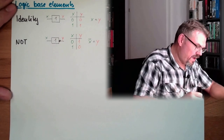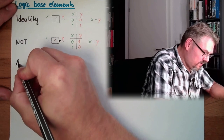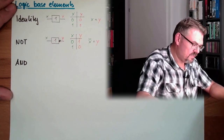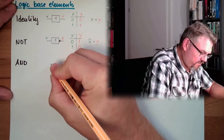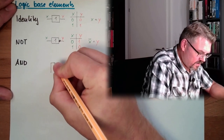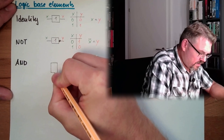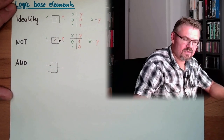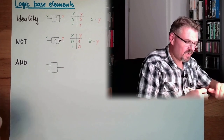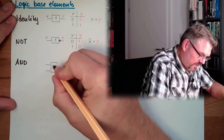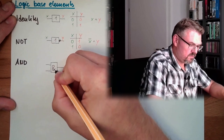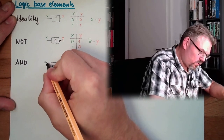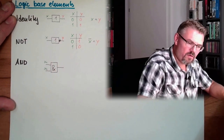And then we have a so-called AND. The symbol has two entries and one exit, and the symbol inside is an ampersand — this AND symbol. This time we have x1, x2, and y.